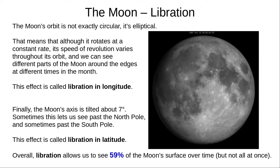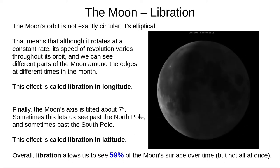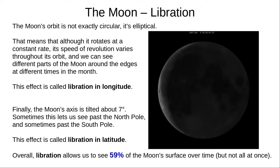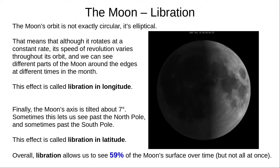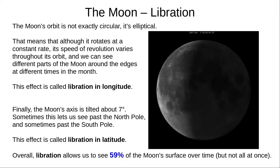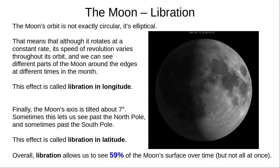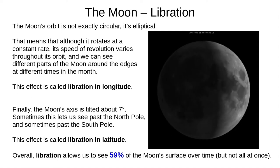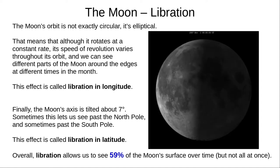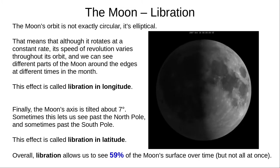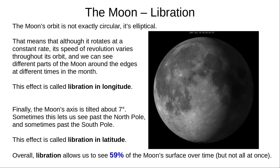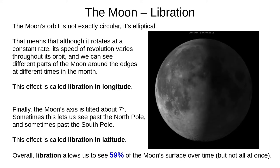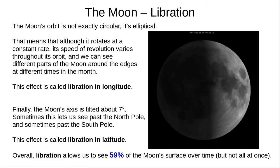This video shows the other two types of libration, which occur throughout a month. First, because the Moon's orbit is elliptical, not circular, we see it at slightly different angles, and we can sometimes see further east and sometimes further west. This is libration in longitude. Second, because the Moon's axis is tilted about seven degrees from the plane of its orbit, we can sometimes see past the North Pole, and sometimes past the South Pole. This is called libration in latitude. With all these effects combined, we can see a total of 59% of the Moon's surface from Earth.